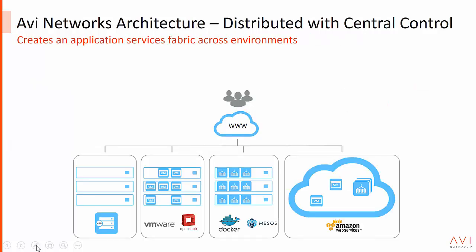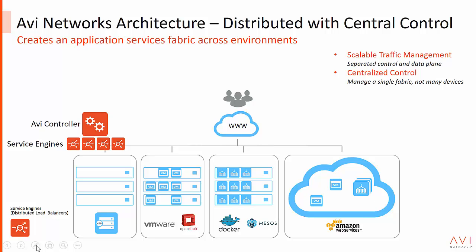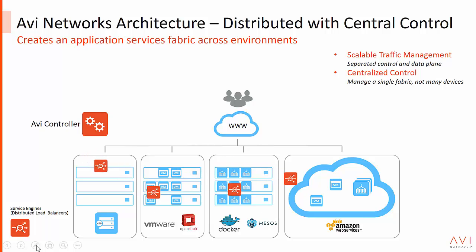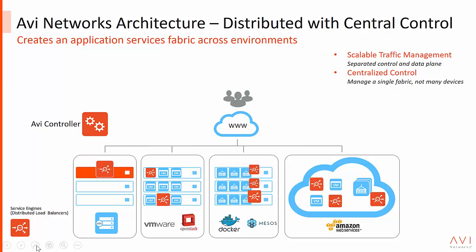Avi Networks takes an innovative software-defined approach which simplifies load balancing while expanding the scope of what you can expect from load balancers in modern data centers and clouds. Avi delivers L4 through L7 services across multi-cloud environments and can run on bare metal servers, virtual machines, containers, or the public cloud.